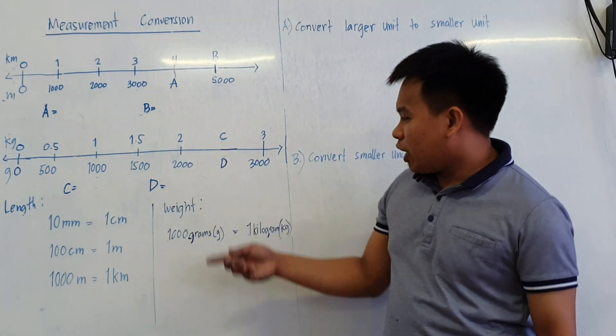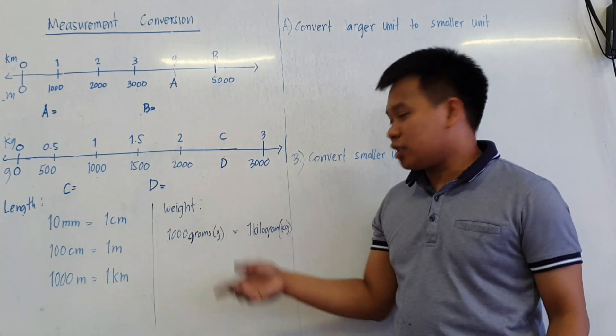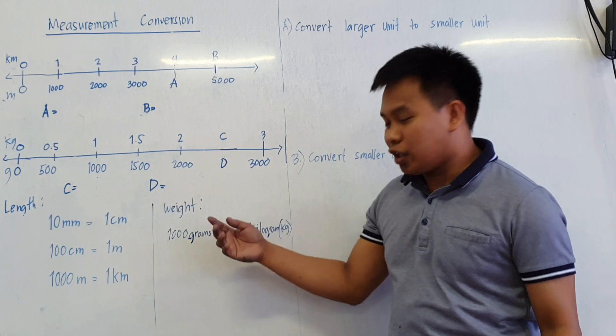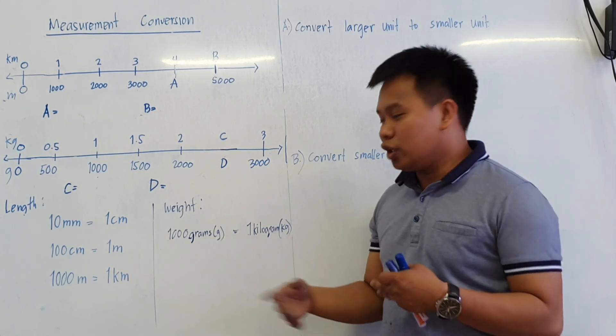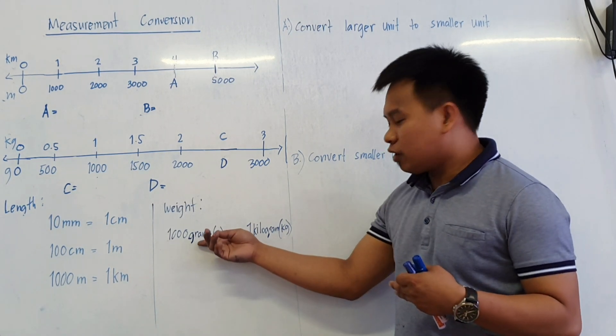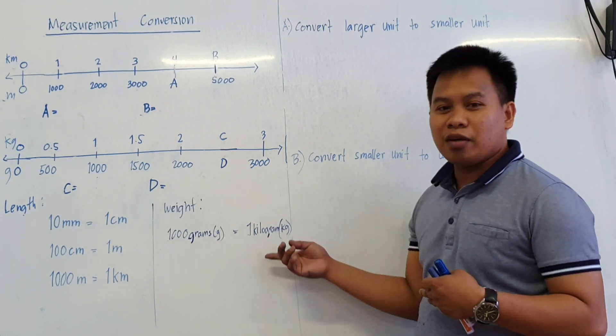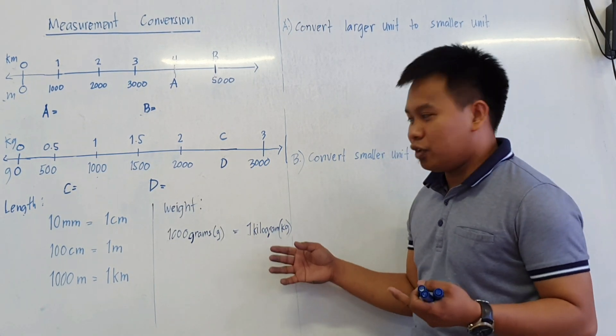For the weight, we have the mass. So we are going to use the units grams and kilograms, which is only two.